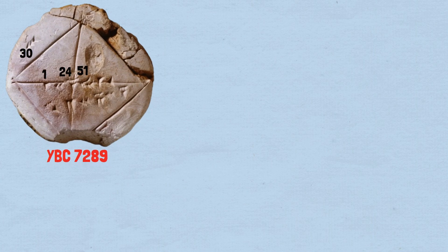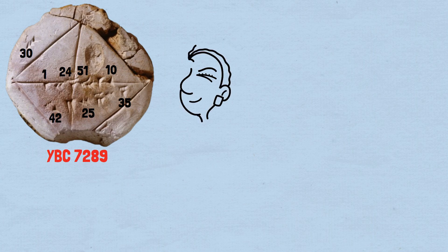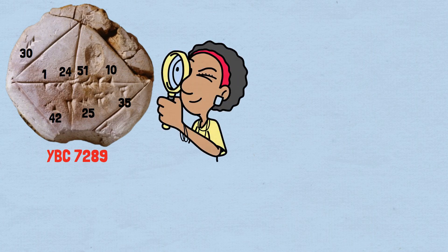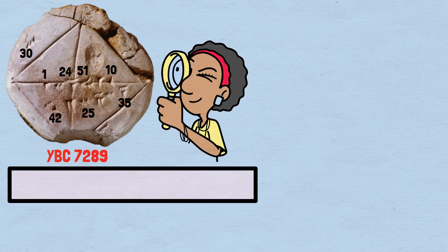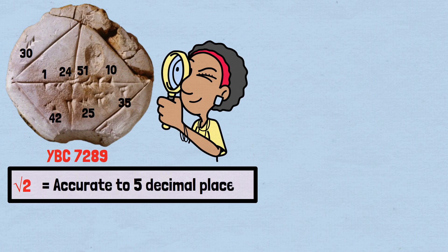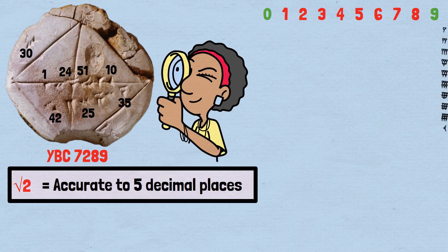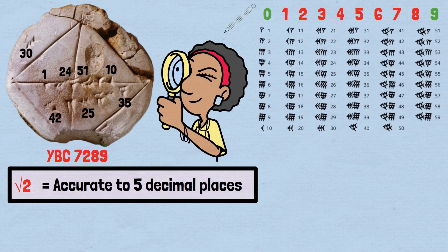arranged in a specific pattern that reveals the Babylonians' understanding of geometric relationships. When archaeologists first deciphered these wedge-shaped marks, they discovered something extraordinary: an approximation of the square root of two that's accurate to five decimal places. The Babylonians didn't use our familiar base-10 number system. Instead, they employed a sophisticated base-60 system. Each number was built using combinations of two basic cuneiform symbols: a vertical wedge representing one and a corner wedge representing ten.